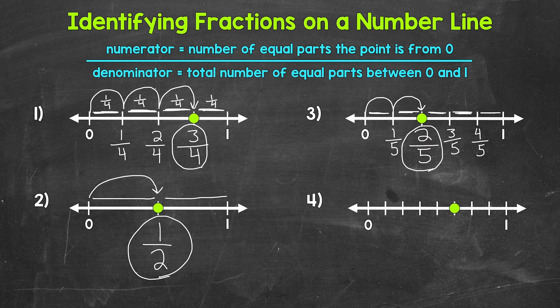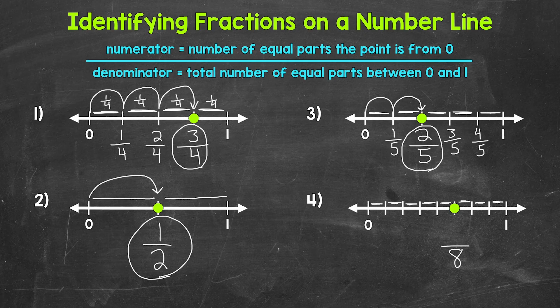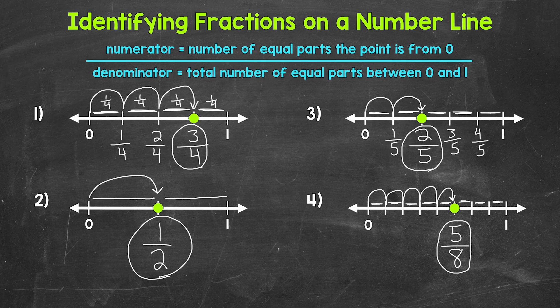Lastly, let's take a look at number four, and we will start with the denominator. How many total equal parts has the distance between zero and one been divided into? One, two, three, four, five, six, seven, eight — so eight is our denominator. We have eighths here; each part is one eighth of the whole. Now for the numerator: how many equal parts is the point away from zero? One, two, three, four, five — so five is our numerator. This number line represents five eighths.